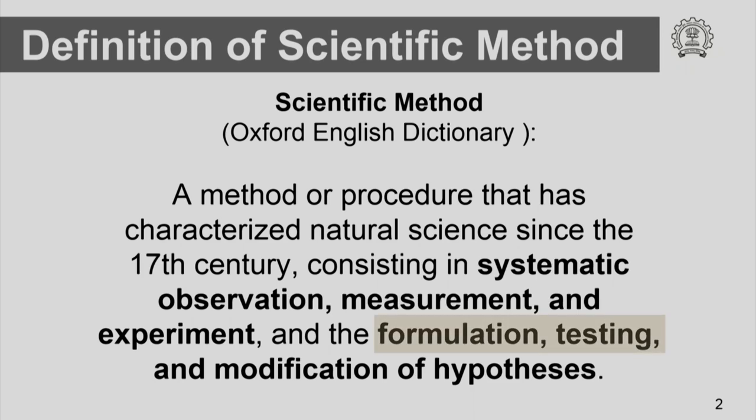Followed by this, the second set of highlighted words are formulation, testing and modification of hypothesis. The next critical thing is to formulate a hypothesis that explains the observations and explains the results of the experiment. We have to first formulate the hypothesis, then test it, and if necessary, modify it.